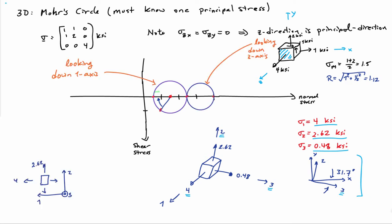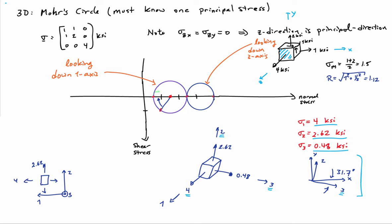I can also draw a second circle by connecting the first and the second principal stress. That corresponds to looking down the three-axis at the 2-1 plane. If I look directly down the three-axis, I see 4 KSI going in the one direction and 2.62 KSI going in the two direction — and that's exactly what this second circle shows me. This also gives me a way of interpreting my first circle as looking down the one axis, or first principal axis. Each circle can be thought of as looking down one of the principal axes.